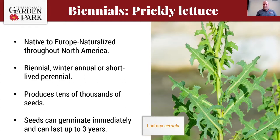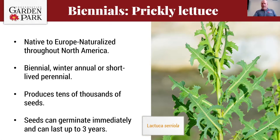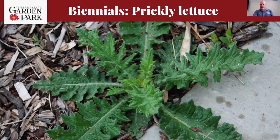Prickly lettuce is our first biennial example. Native to Europe but naturalized throughout the United States, it can act as a winter annual or a short-lived perennial depending on conditions. It produces tens of thousands of seeds per plant, and seeds germinate almost immediately after hitting moist soil. Seeds only last about three years in the soil, so if you can keep it under control for three or four years, you should achieve long-term control. In its first year it appears as a rosette — ideally the form in which you'd take care of it before it bolts to seed.